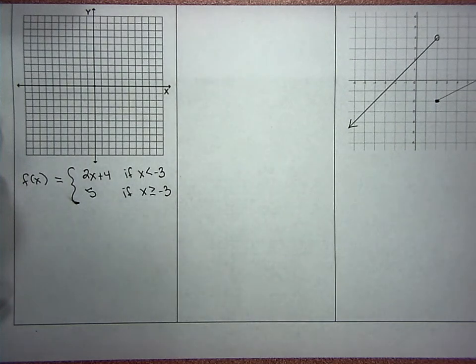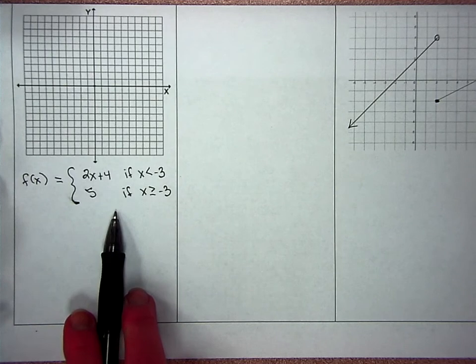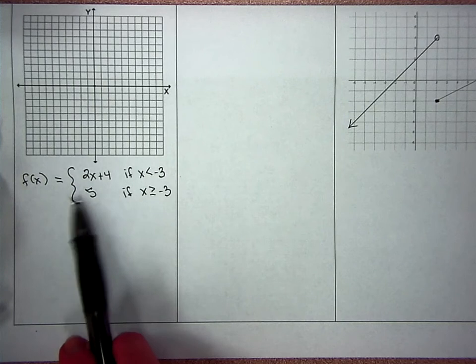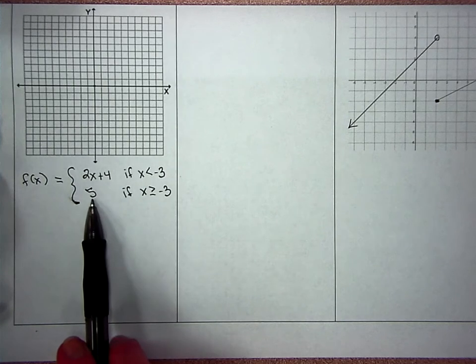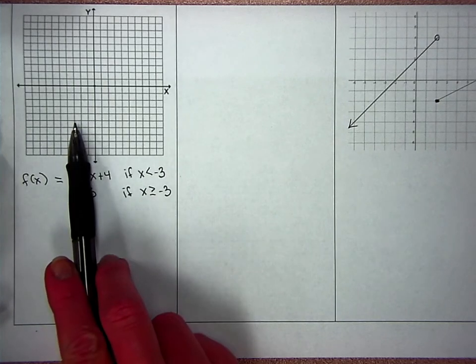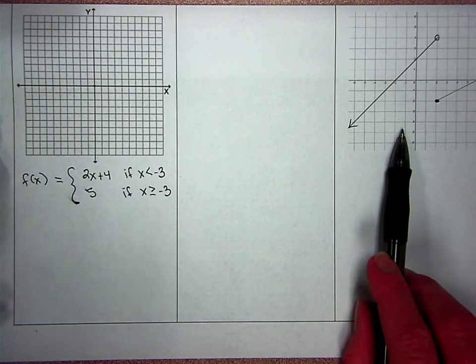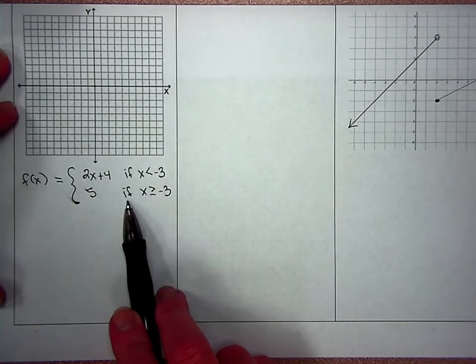Alright, so today I wanted to give you a summary about piecewise functions that are going to be on the test. You're going to encounter one of two scenarios. This scenario, I'm given a function and I have to graph it. What do I do? Versus this one, I'm given a graph and I have to write a function.